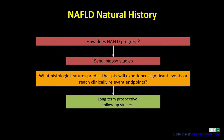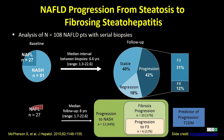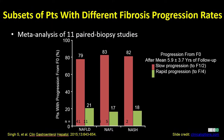Looking at serial biopsy studies on natural history, the progression from one stage to the next for simple steatosis is 14.3 years, whereas for NASH it is 7.1 years — half that of simple steatosis. So NASH is quite progressive, and the progression from stage to stage is also more rapid in NASH. The predictor for progression is type 2 diabetes mellitus. There are both slow and rapid progressors, even within NAFLD, whether simple steatosis or NASH.